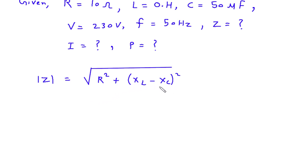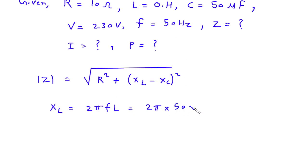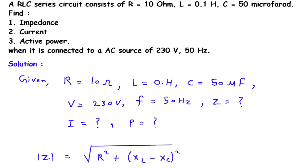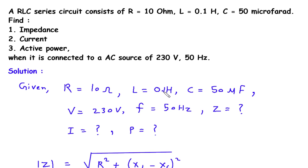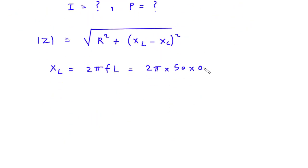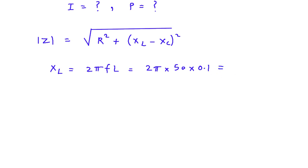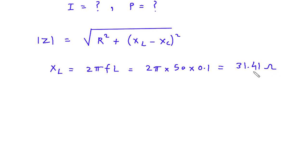First of all we have to find XL and XC. XL is inductive reactance and it is equal to 2 pi F L. So this will be 2 pi multiplied by F, which is 50 hertz, multiplied by L, which is 0.1 Henry. If we calculate this, it is 2 pi multiplied by 50 multiplied by 0.1, which gives 31.41 Ohm. This is the value of XL.